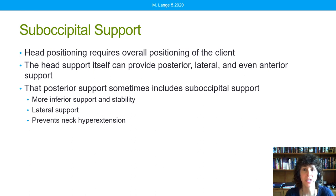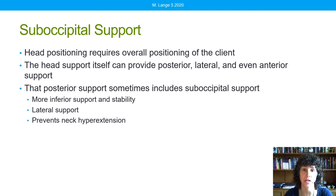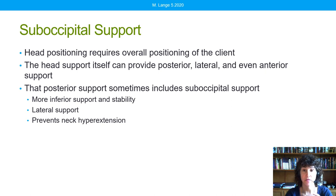So, suboccipital support. Good head positioning requires good positioning of the entire client — we have to do a full seating evaluation to make sure we're really meeting this person's needs. Then we bring in the head support, which can provide posterior, lateral, and suboccipital support as needed for an individual. That posterior support including suboccipital support is sometimes what's required to provide more inferior support, give the head something to rest on, stability, a degree of lateral support on either side of the neck or even the jaw depending on the size of the suboccipital pad, as well as preventing neck hyperextension.